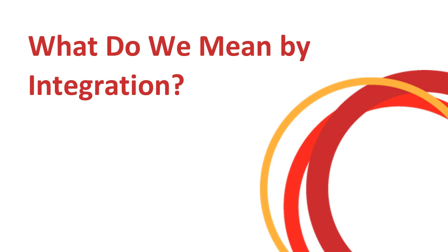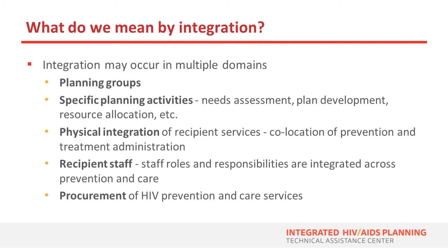Integration does not look the same across jurisdictions and can happen in different ways, including across HIV and other infectious diseases. Integration can take place across several domains that include planning groups, planning activities, physical integration, integrating recipient staff, and procurement. In addition to occurring across different domains, integration can also occur across a spectrum within each domain, ranging from no integration to full integration. There's no single right way for integration to look. The IHAPTAC developed an instrument that measures progress toward integration across multiple domains, which was piloted with eight Ryan White Part A and Part B recipients.